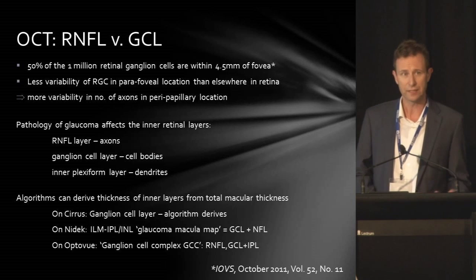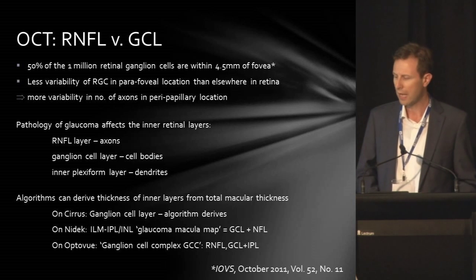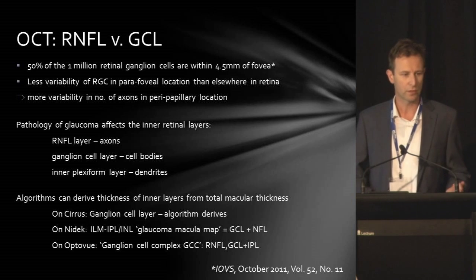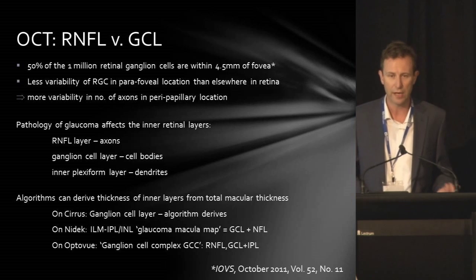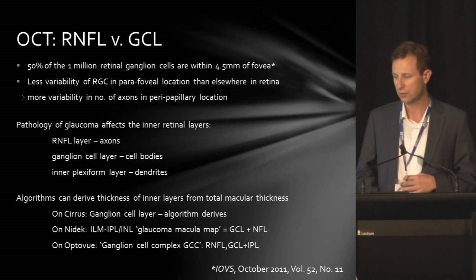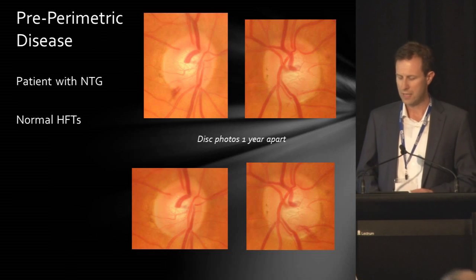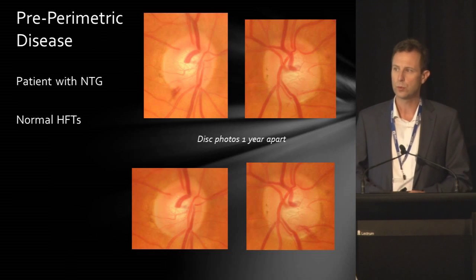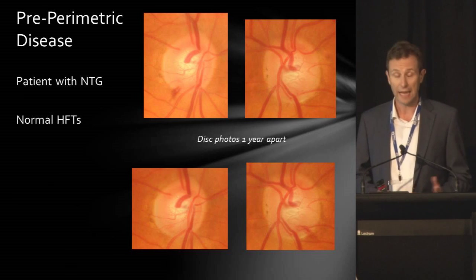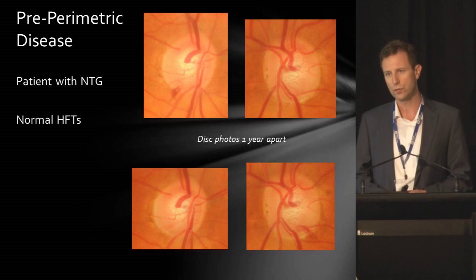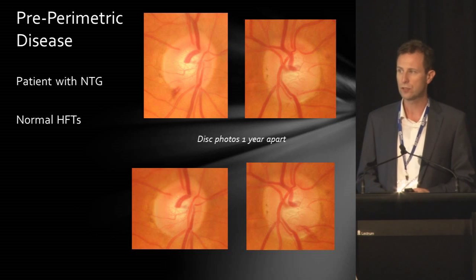The different machines measure slightly different things. The cases I'm going to present are basically from the Cirrus and the NIDEC machines which we've had access to at Macquarie. I'm going to give you a couple of different examples in the different categories of where this can be useful. Firstly, I think it's very useful in cases of pre-perimetric disease.